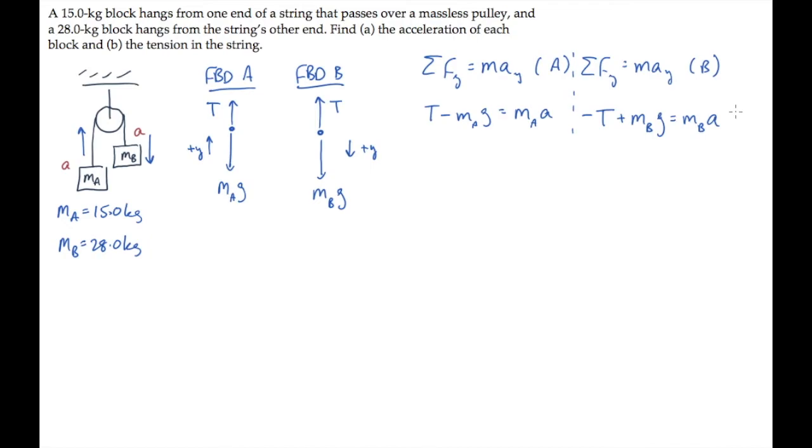We now have two equations for two unknowns. We don't know the tension, and we don't know the acceleration. Perhaps the easiest way to solve these is to take the equation for B and add it to the equation for A, so that the tension, one of our unknowns, disappears from the equation. And we end up with the difference in the masses times g equals the sum of the masses times a.